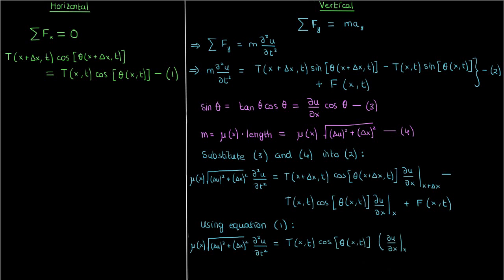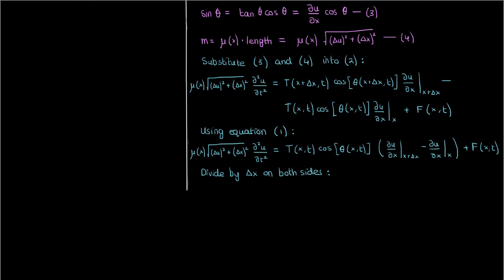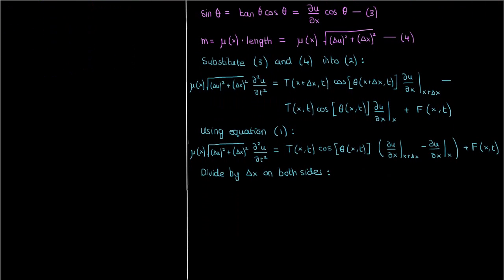Next, we're going to take out the delta x from the square root and divide both sides of the equation by it. And then we're going to take the limit of this equation as delta x approaches 0.